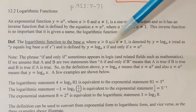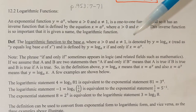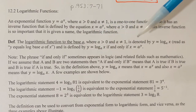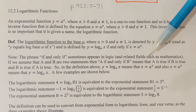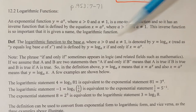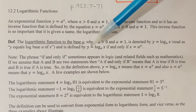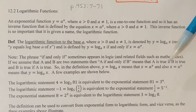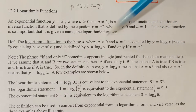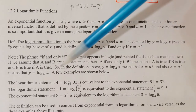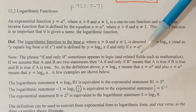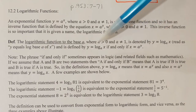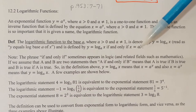The phrase 'if and only if' means that you have two if-then statements. I could read it beginning to end: if y = log_a(x), then x = aʸ. I could also read it end to beginning: if x = aʸ, then y = log_a(x). Both directions are true — that's what we mean by 'if and only if.'